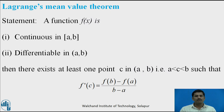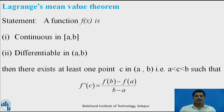Now let us consider the statement of Lagrange's mean value theorem. Let f(x) be any function defined on the closed interval [a, b] satisfying the conditions that f(x) is continuous in the closed interval [a, b] and differentiable in the open interval (a, b). Then there exists at least one point c in the open interval (a, b) such that f'(c) = [f(b) - f(a)] / (b - a).